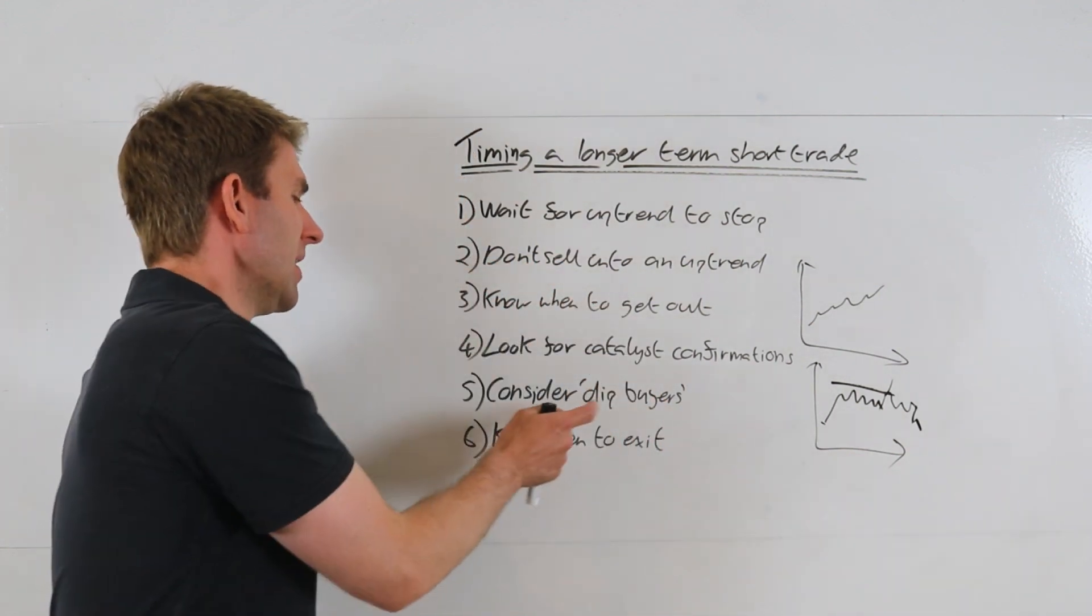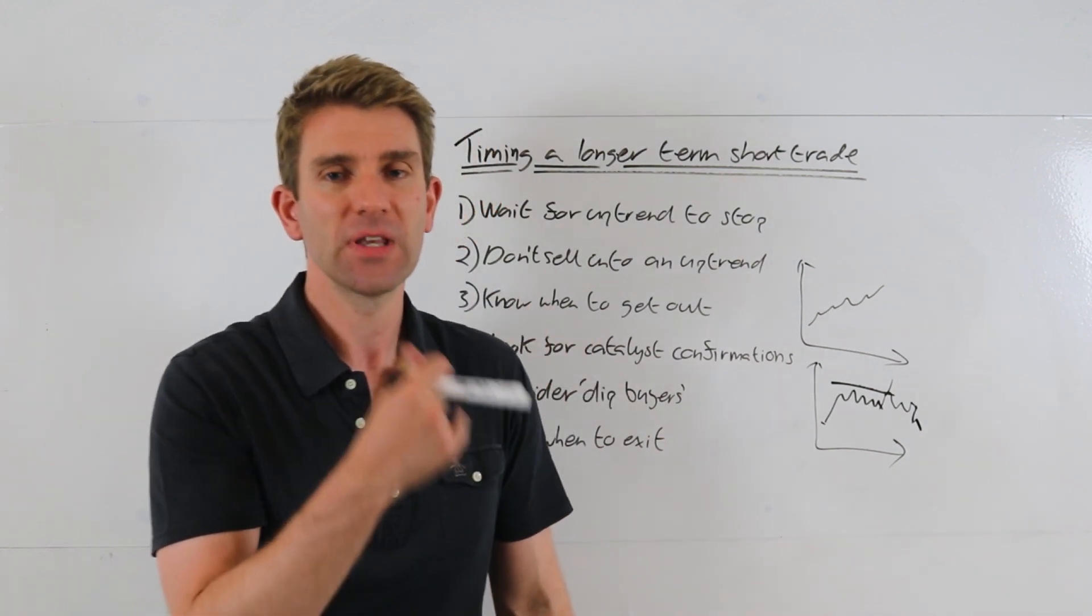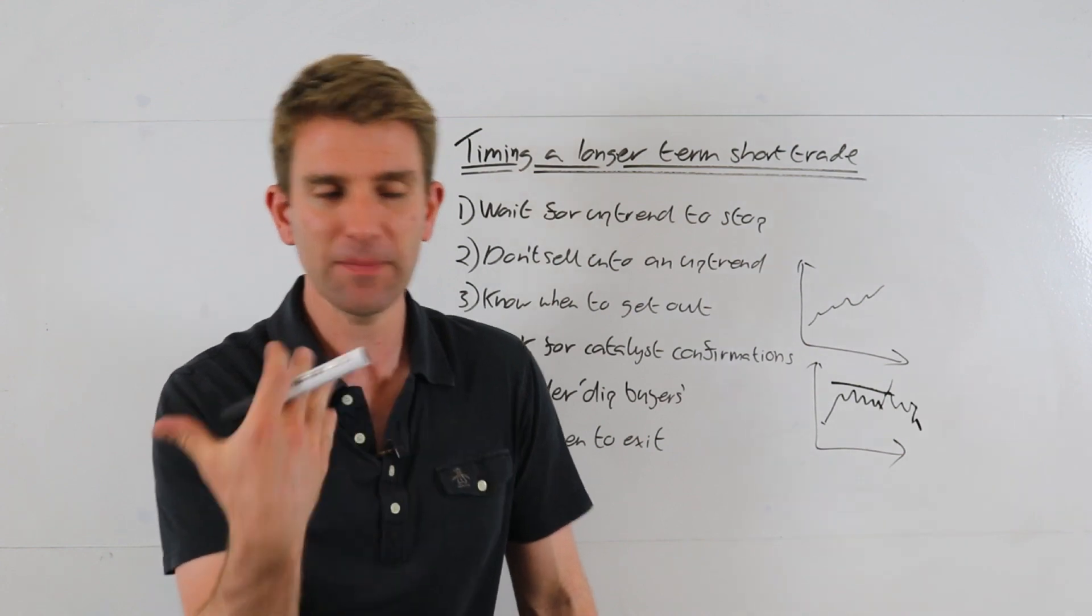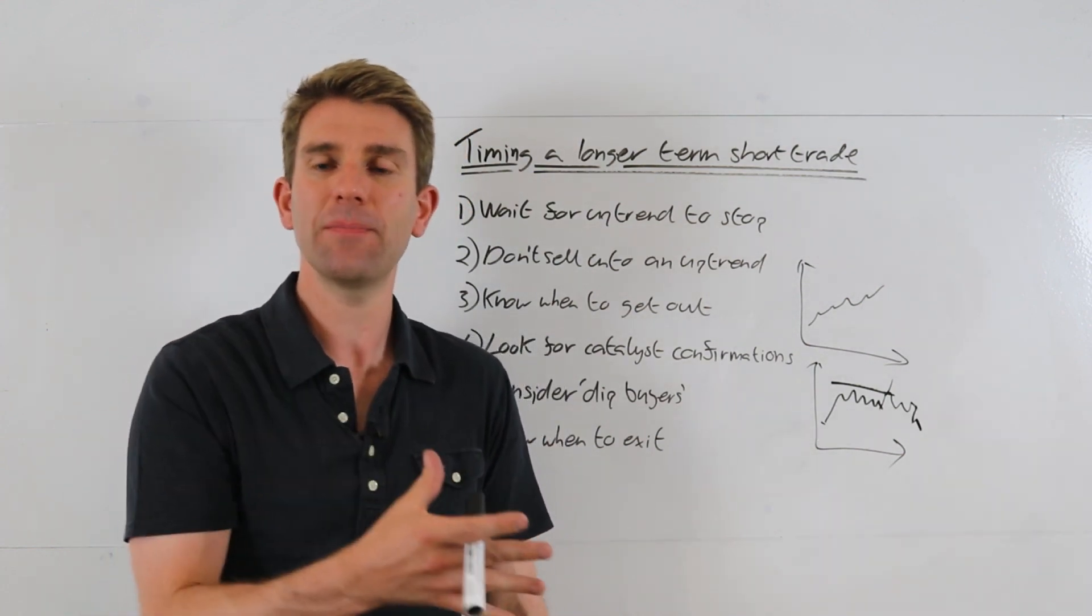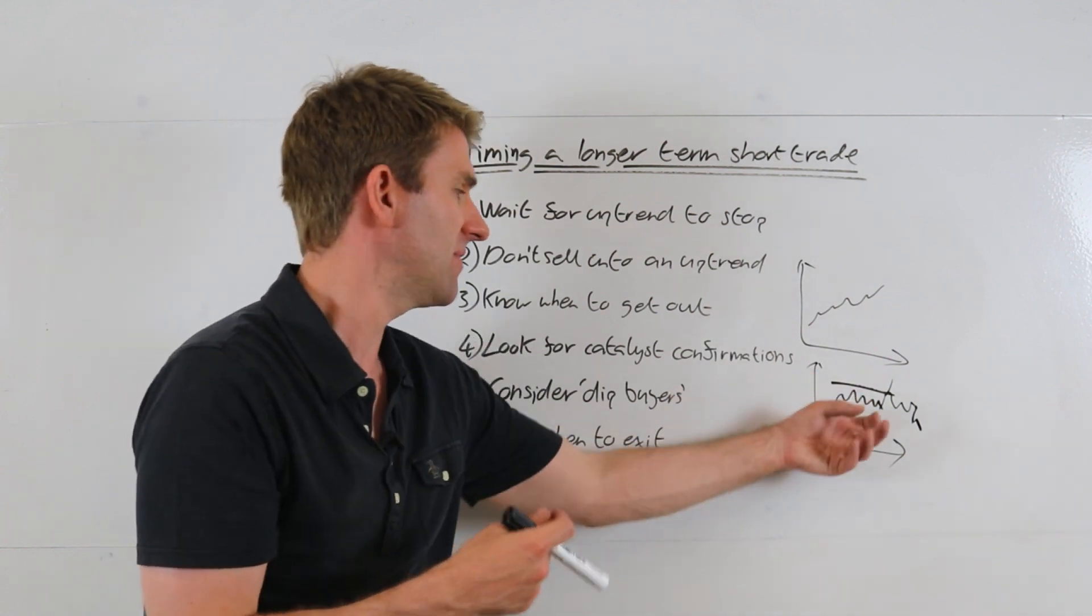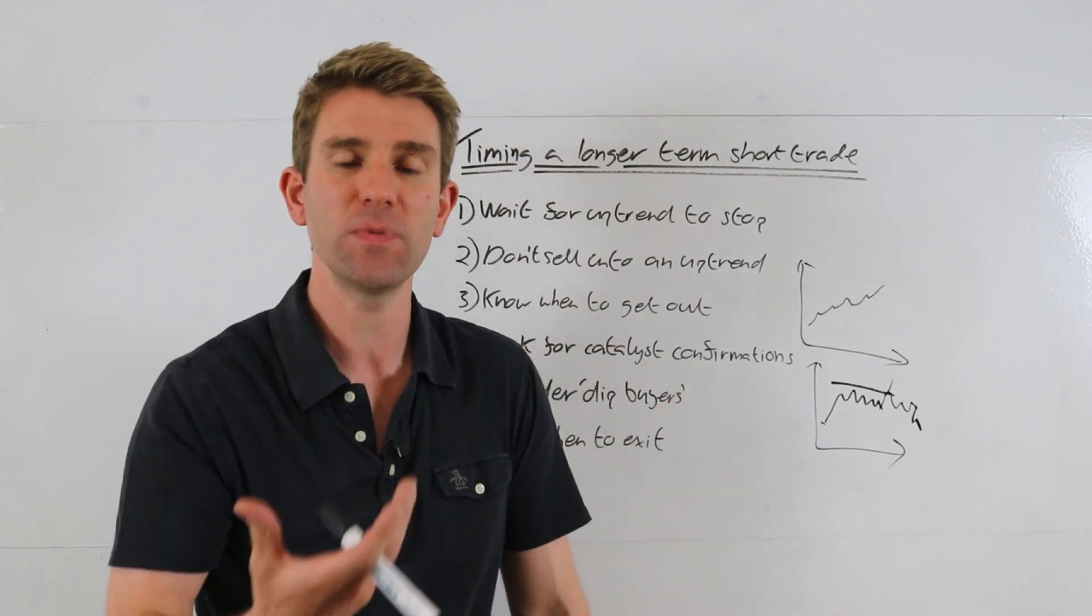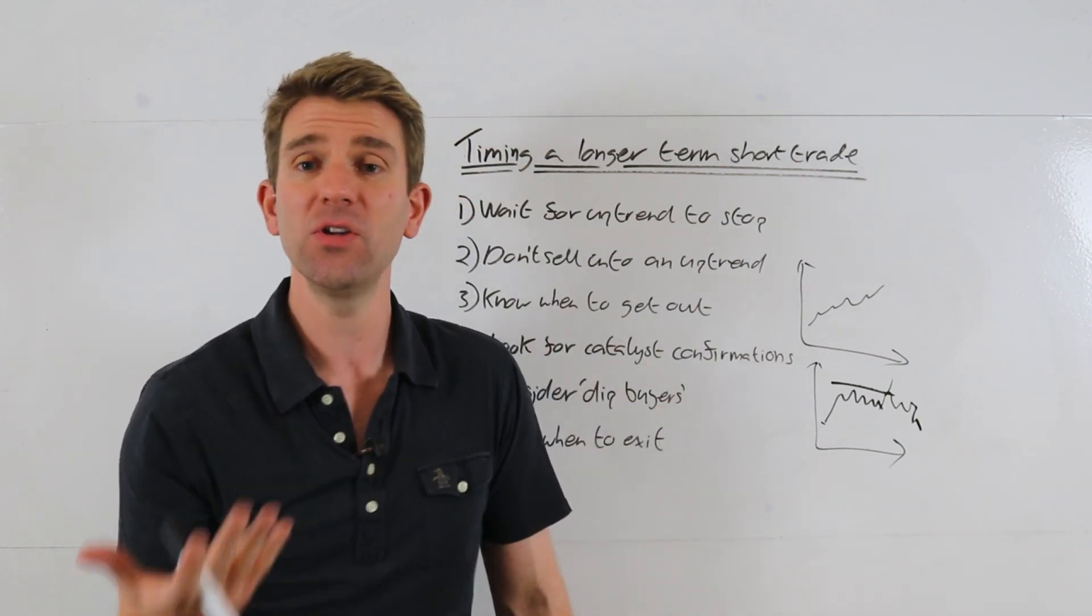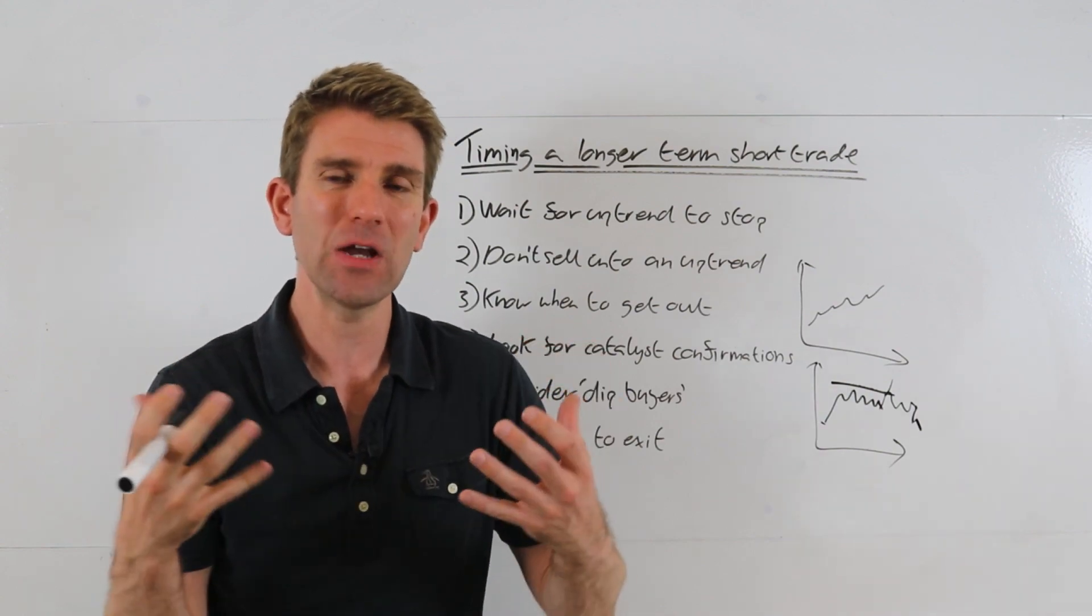Number five is consider dip buyers. So always look at the bullish argument. It's easy to get stubborn and to start thinking about how bad this company is, but look at the bullish argument. Take a step back and say: why would people buy this? If it dipped down here, why would it be perceived as good value? Why would bad news be perceived as good news? All these kind of things.